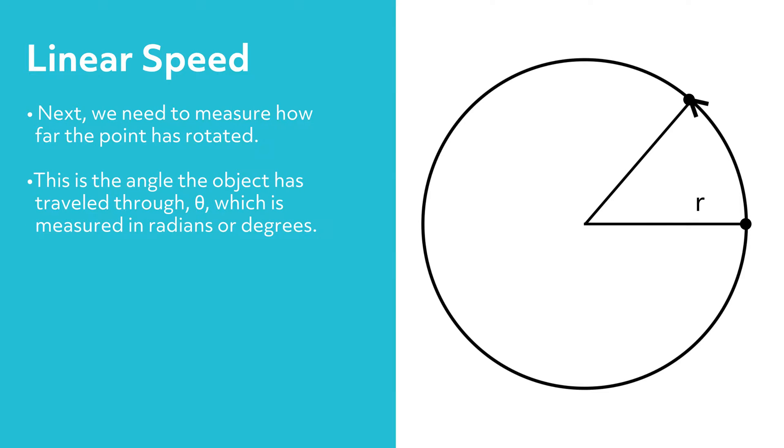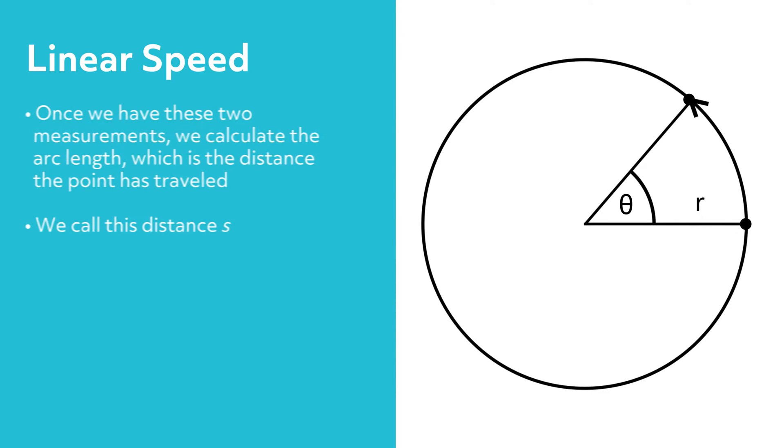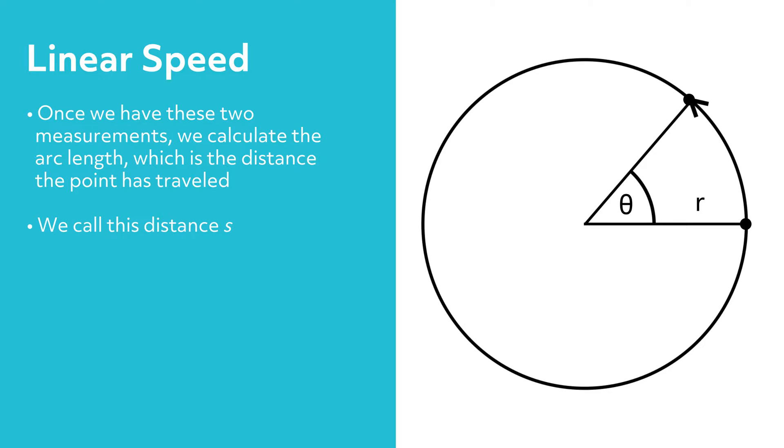Next, we need to measure how far the point has rotated. This is the angle the object has traveled through, theta, which is measured in radians or degrees. Once we have these two measurements, we calculate the arc length, which is the distance the point has traveled. We call this distance s, and the equation we use is s equals r times theta.